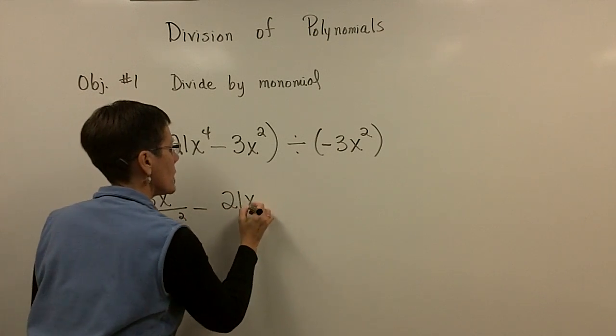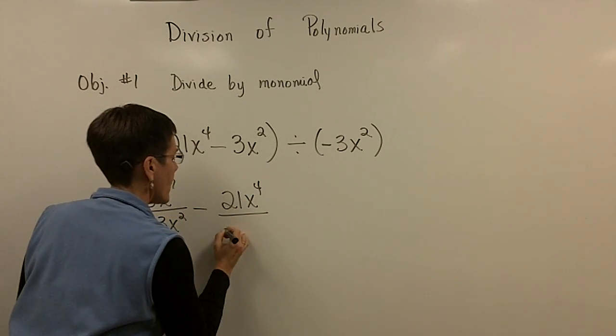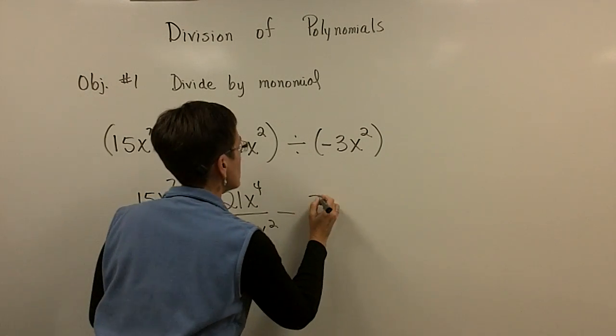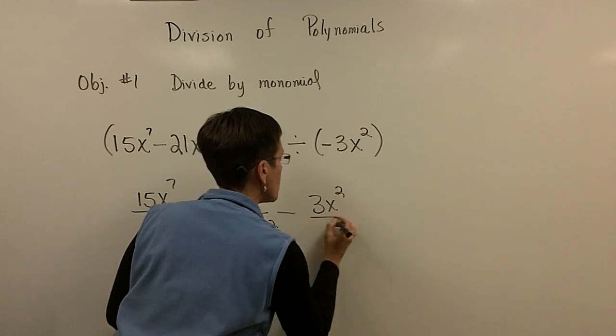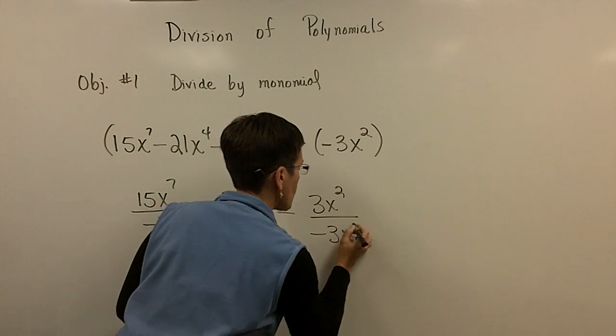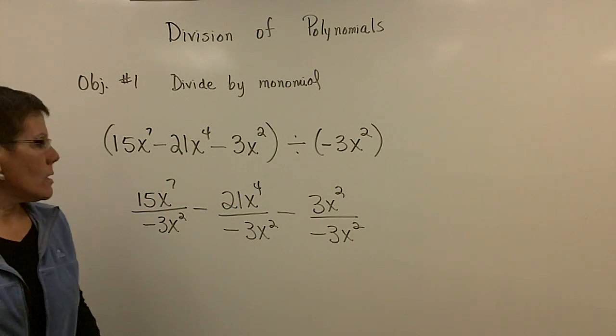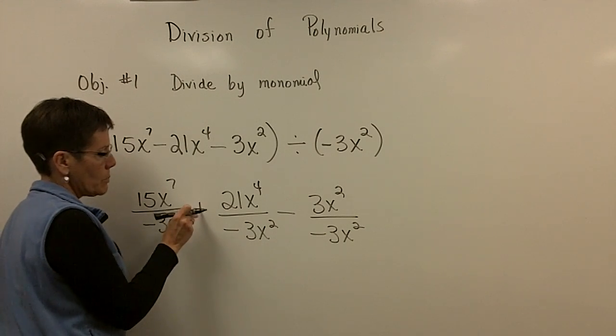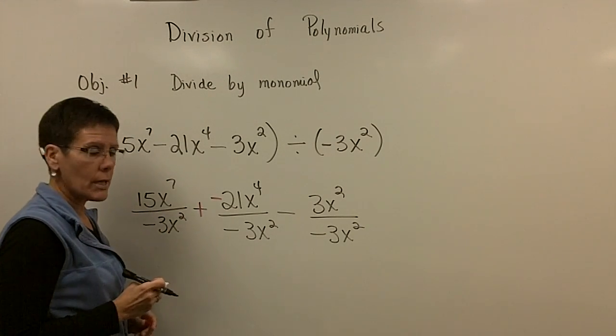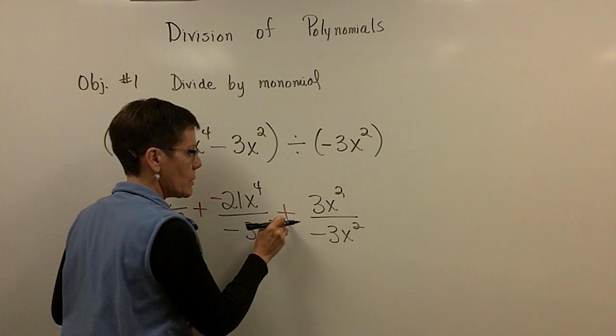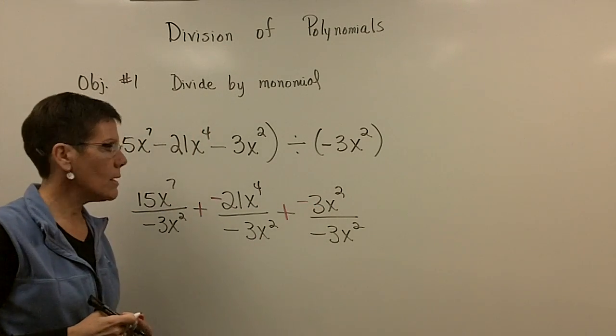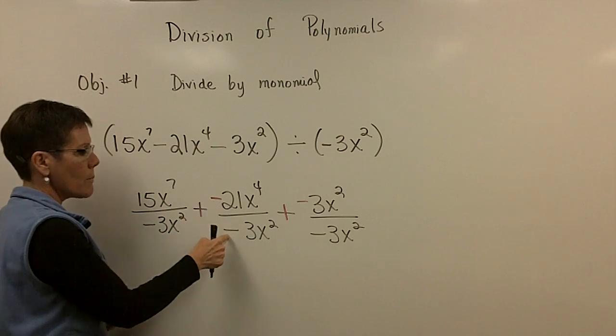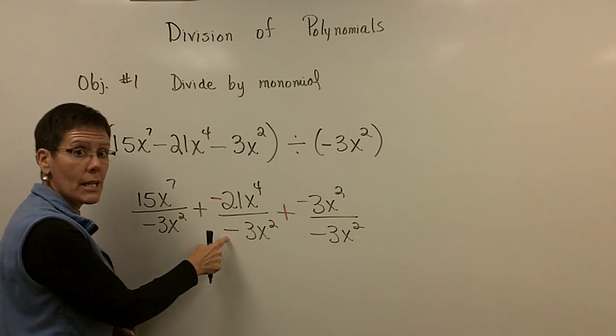So the -21x^4 is going to be divided by -3x^2. And then this -3x^2 has to be divided by -3x^2. Please, if you need to recognize that that minus sign means plus a negative 21x^2, and that minus sign means plus a negative 3x^2, you're welcome to do that. And it might help you when you have to take this negative divided by a negative as a positive.